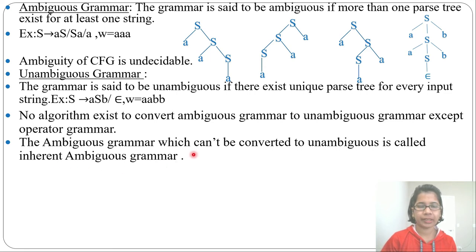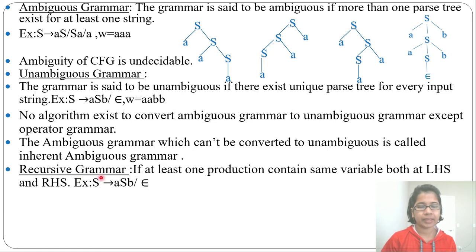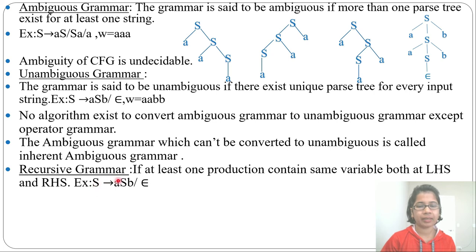The ambiguous grammar which cannot be converted to unambiguous grammar is called inherent ambiguous grammar. Next is recursive grammar. If at least one production contains the same variable both at LHS and RHS, then it is called recursive grammar. Here you can see S is a variable present on the left side that is also present on the right side — this is a recursive grammar.